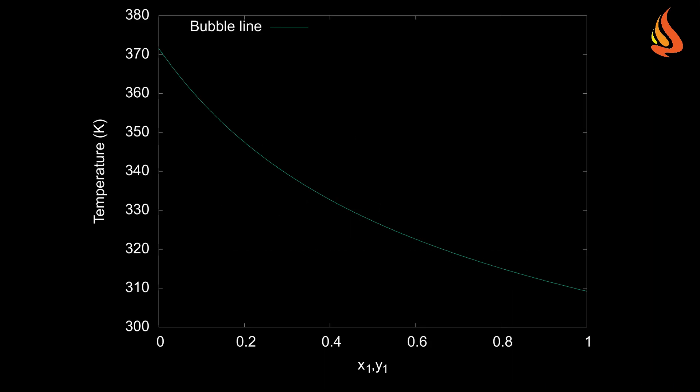This green line is the result of plotting the mole fraction of n-pentane in the liquid phase against the system's temperature. It receives the name of bubble point line, and the reason for that will become clear quite soon.